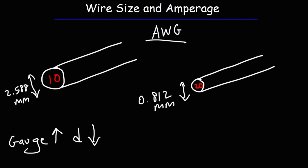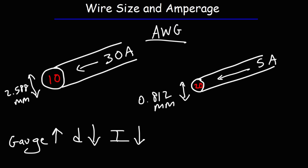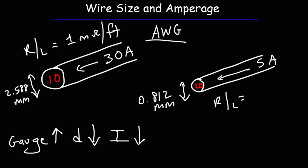A wire gauge of 10 can handle a current of 30 amps, whereas a wire with a gauge of 20 can handle a current of 5 amps. So as the gauge number increases, the amount of current it can handle decreases. The resistance per unit length of a wire with a gauge of 10 is 1 milliohm per foot, whereas for a gauge of 20 it is 10 milliohms per foot. So as the wire gauge increases, the resistance per unit length increases as well.